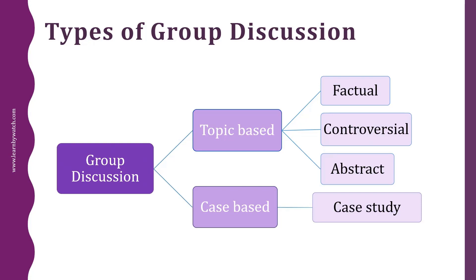Factual topics are about practical things which an ordinary person is aware of in day-to-day life — typically socio-economic topics. A factual discussion gives a candidate a chance to prove they are aware of and sensitive to their environment. Examples include the education policy of India, tourism in India, and global warming. Controversial topics are ones that generate a lot of argument. The noise level is usually high, and the idea is to see how much maturity the candidate displays — keeping temper in control, arguing pleasantly without getting personal or emotional. Examples include women empowerment, crime in India, and caste reservations.